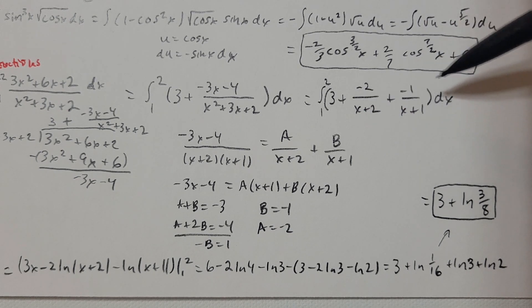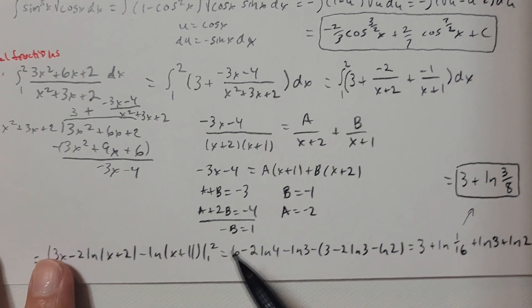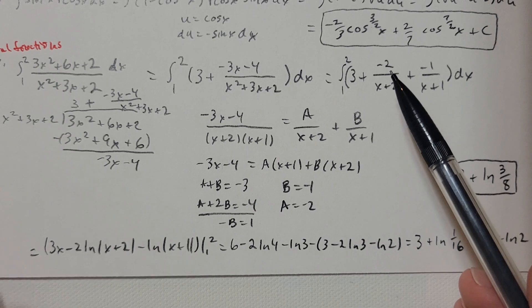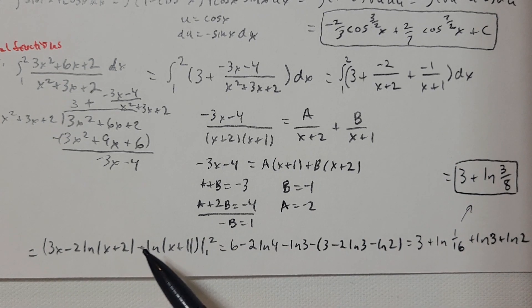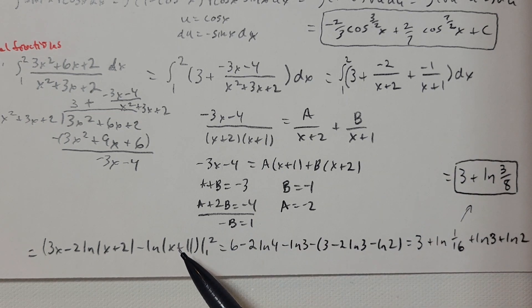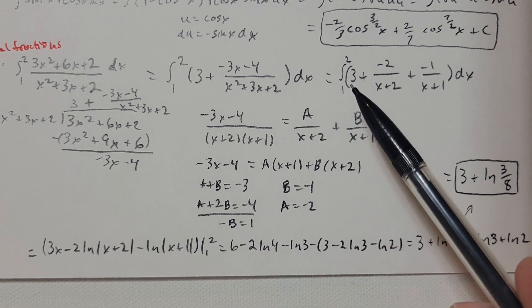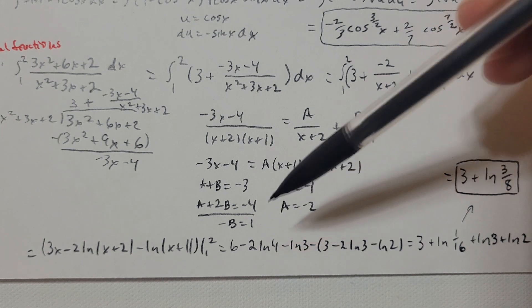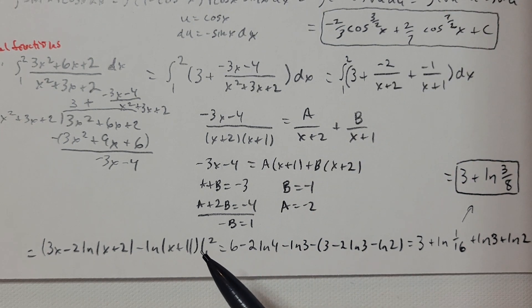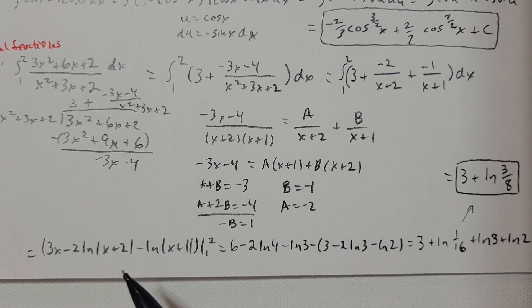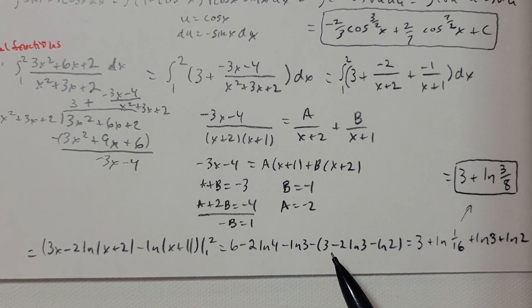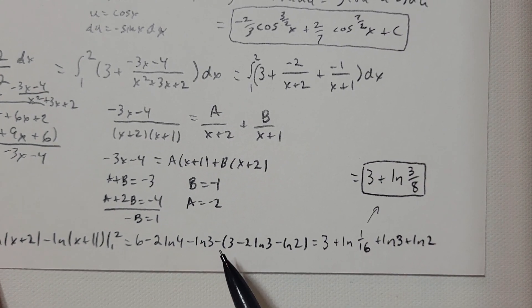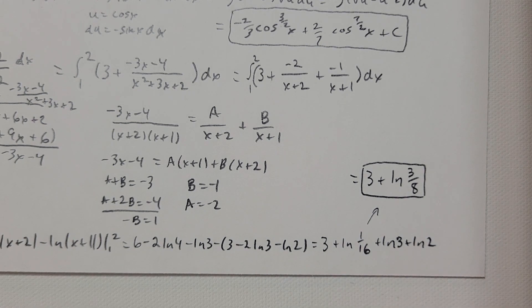Going back to the integral, A is negative 2 and B is negative 1, so I replace those. Now I can integrate. The antiderivative of 3 is 3x, minus 2 times the ln of the absolute value of (x plus 2), minus the ln of the absolute value of (x plus 1), evaluated from 1 to 2. Plugging in 2 first: 6 minus 2 times the ln of 4 minus the ln of 3.